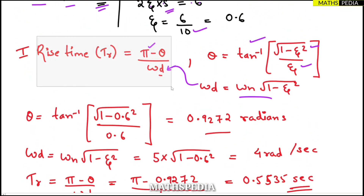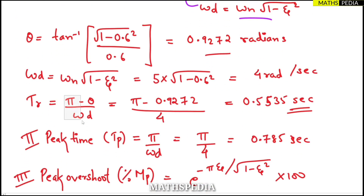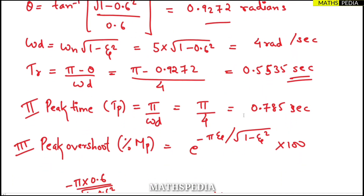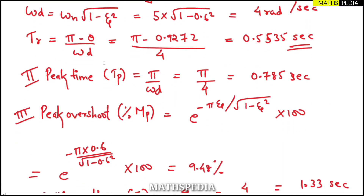Now substituting π, theta, and omega_d = 4 into the rise time formula t_r = (π − θ) / omega_d gives the rise time in seconds. Always remember: whenever time is involved, the unit is seconds.